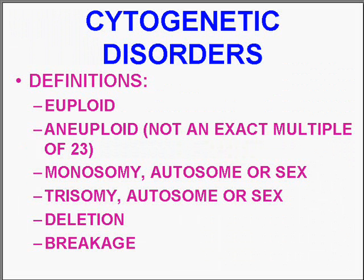A euploid person is a totally normal male or female. An aneuploid person or disorder is one in which you do not have an exact multiple of 23. Monosomies are missing chromosomes.